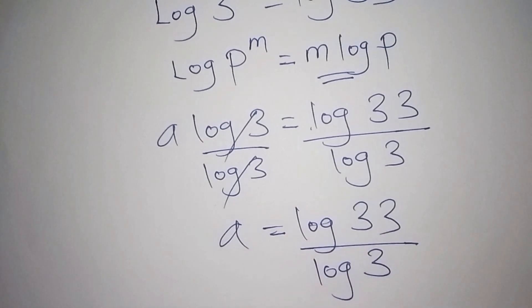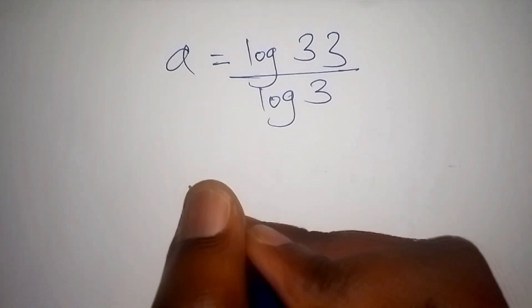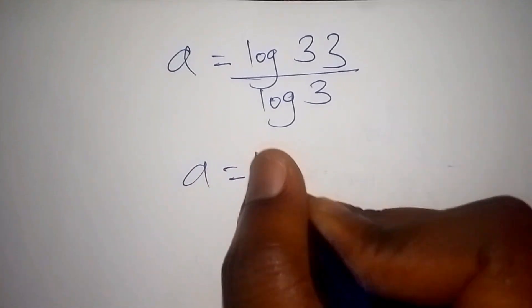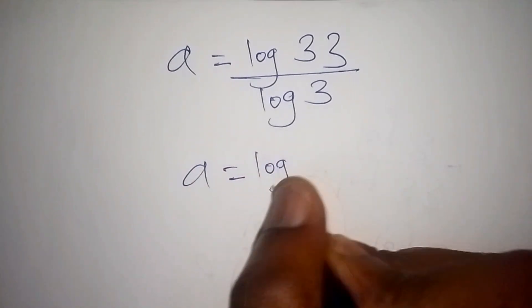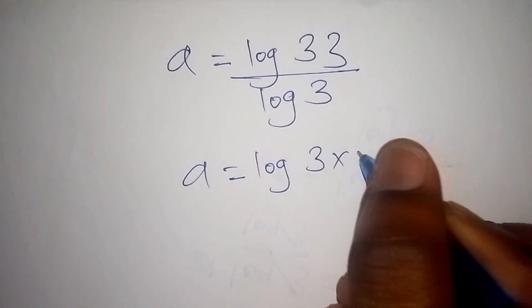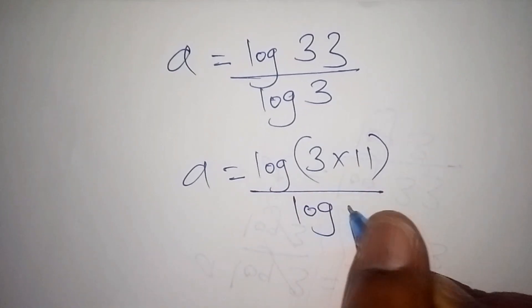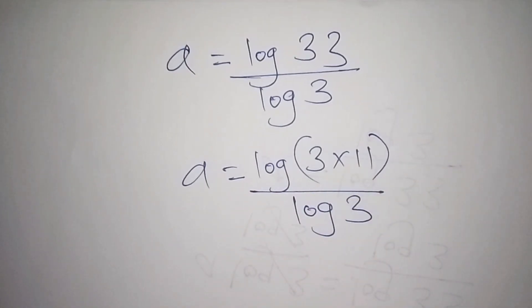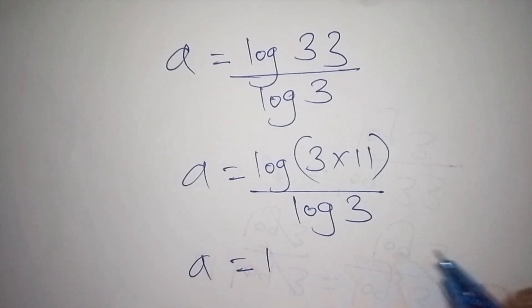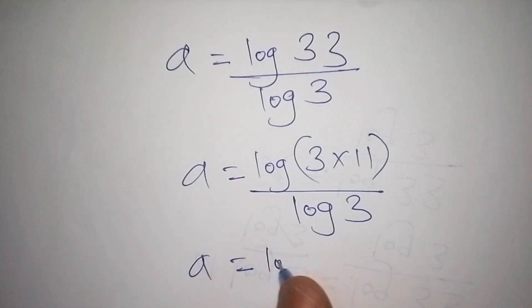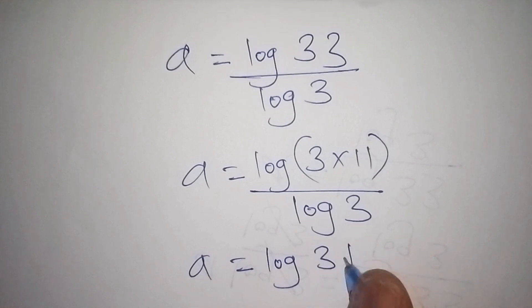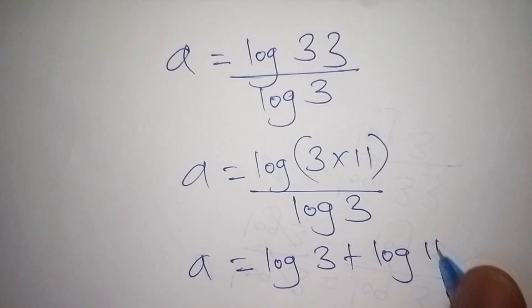This is not yet the final simplified answer. We can go further — since 33 = 3 × 11, we apply the log product rule: log33 = log3 + log11. So we now have: a = (log3 + log11) / log3.